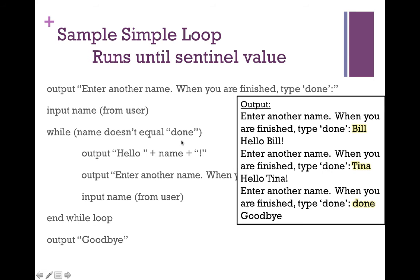Here's a sample run of this program. We ask the user to input a name — when finished, type done. The user types Bill, we store it in the name variable and say hello Bill. Then we ask for another name; the user inputs Tina. Tina does not equal done, so we go back into our loop body, print hello Tina, and ask for another name. This time they type done. Since name equals done, the while condition becomes false and we exit out of our while loop and output goodbye.